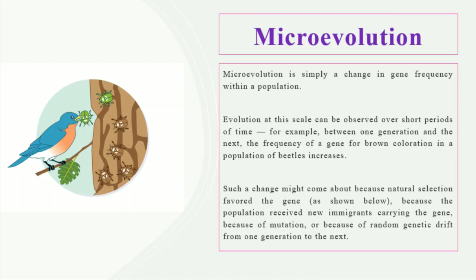So with the passage of time, the alleles that encode the green color will be reduced in the population, as these are not favored by nature. In this way, natural selection can lead to a change in the allelic frequency of genes in a population. Along with natural selection, some other forces also affect the allelic frequency within a population.